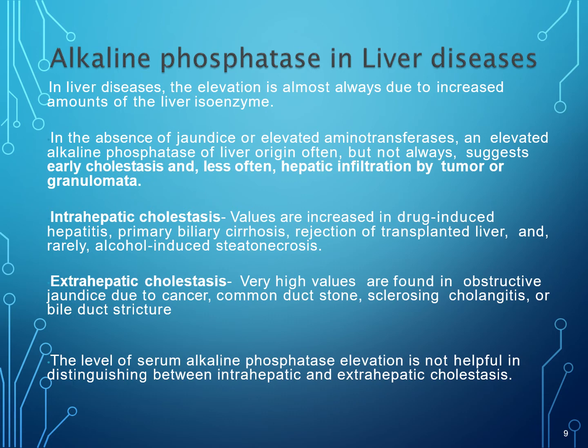Cholestasis is of two types: intrahepatic and extrahepatic. In intrahepatic cholestasis, alkaline phosphatase values are increased in drug-induced hepatitis, primary biliary sclerosis, rejection of liver transplantation, and rarely alcohol-induced steatone necrosis. In extrahepatic cholestasis, very high values are found in obstructive jaundice due to cancer, common duct stone, sclerosing cholangitis, or bile duct stricture. The level of serum alkaline phosphatase elevation is not helpful in distinguishing between extrahepatic and intrahepatic cholestasis.